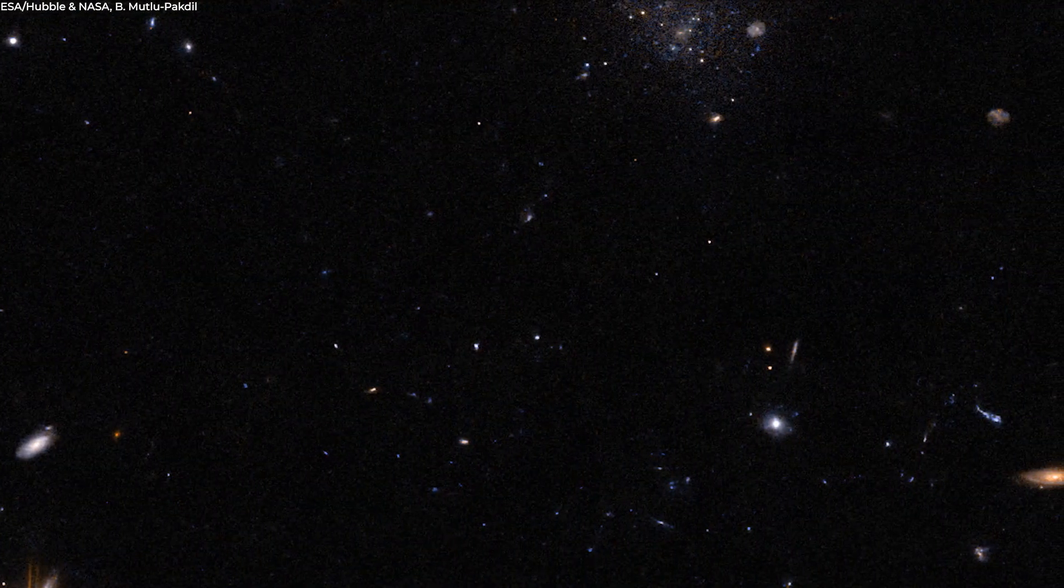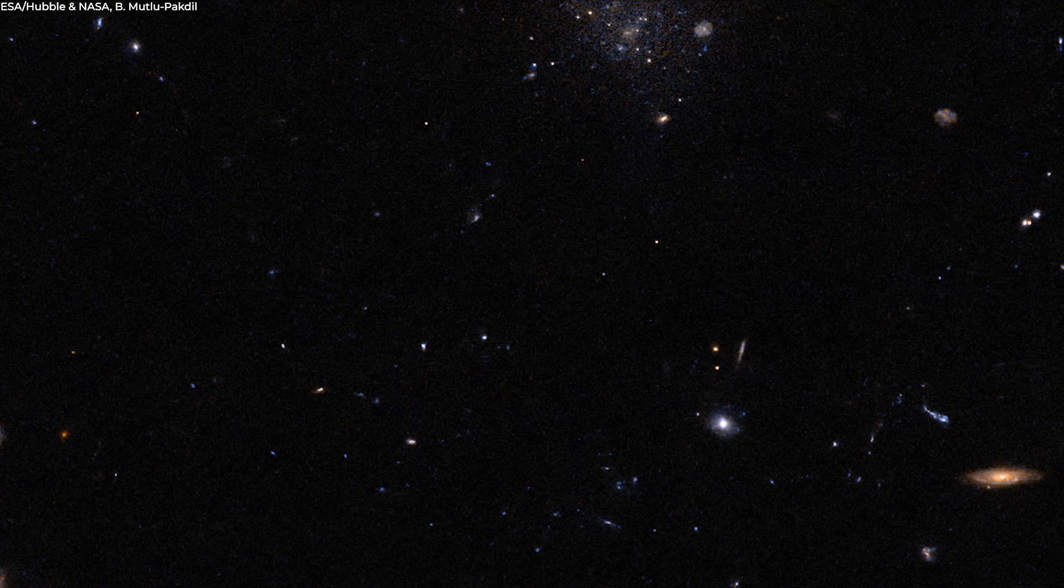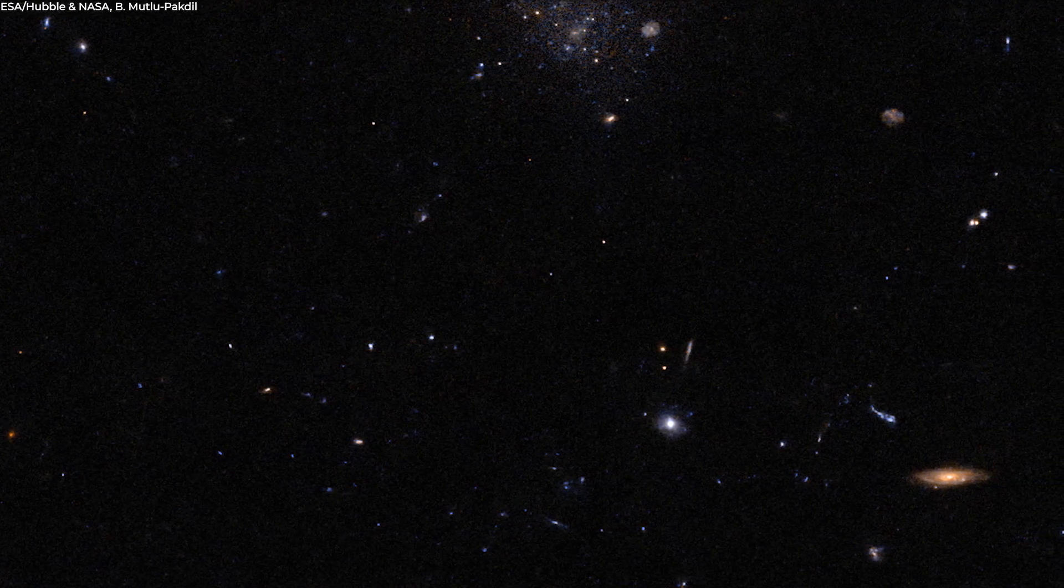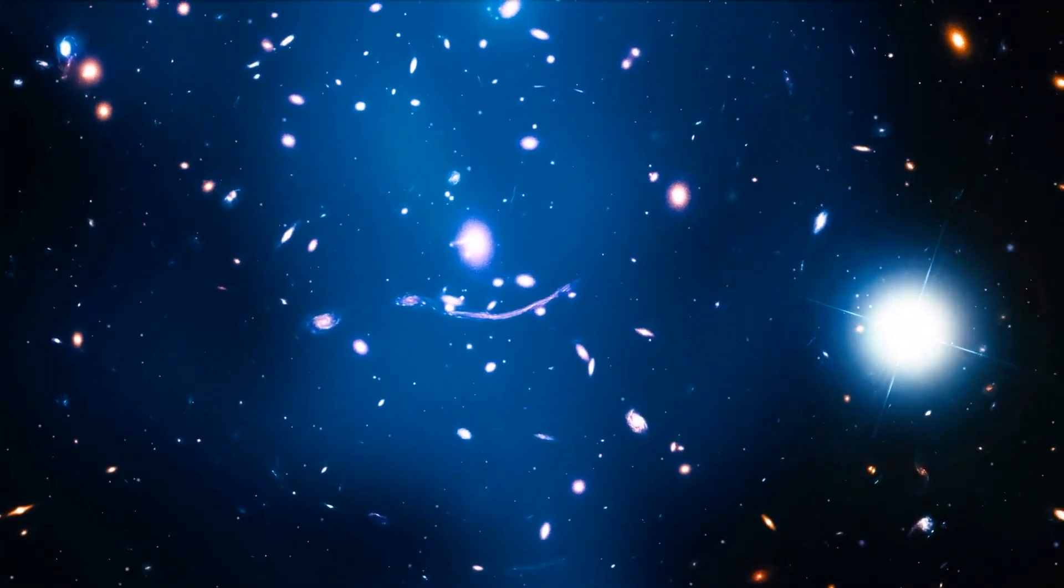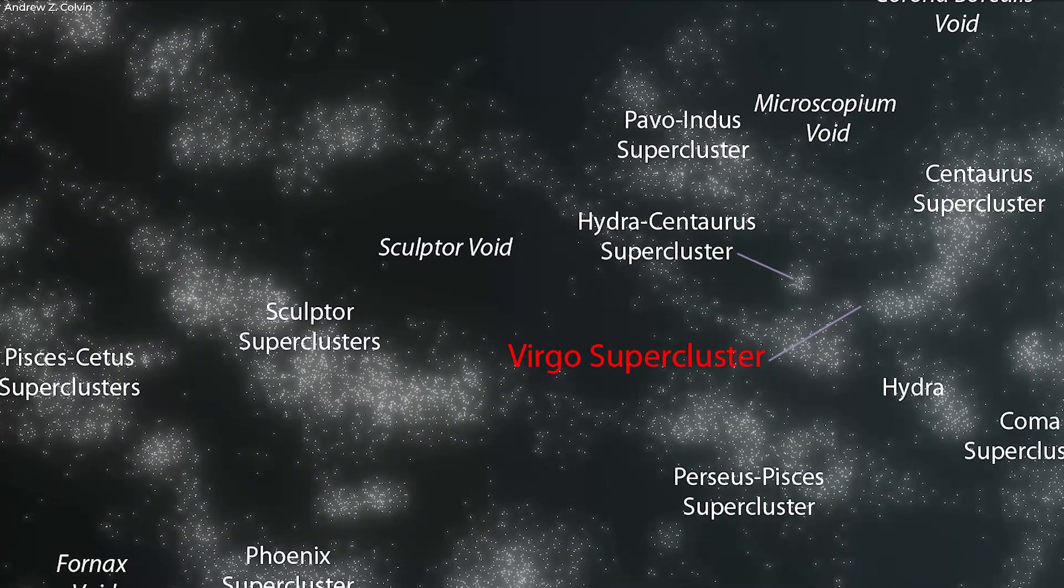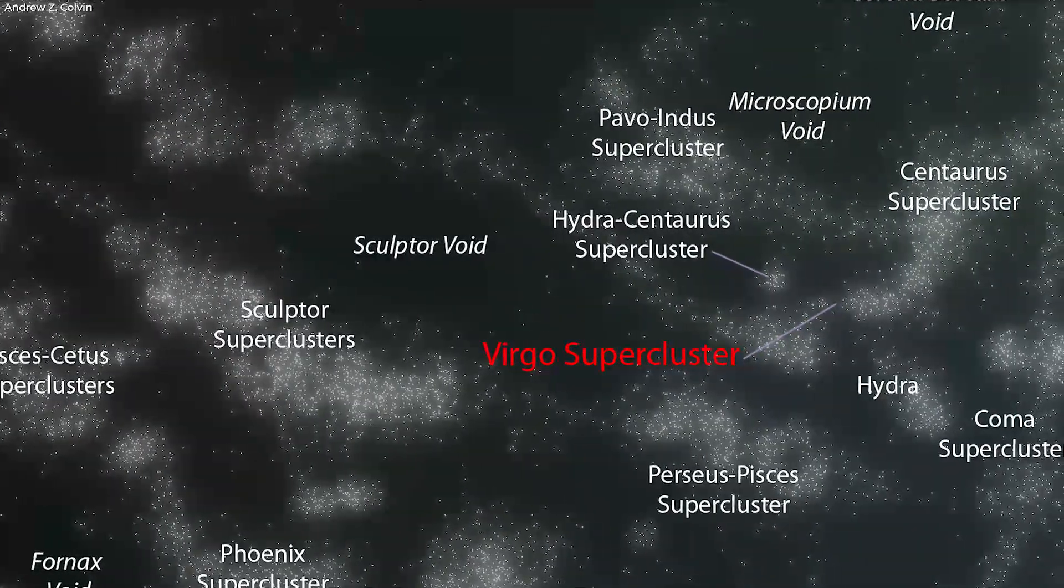If you search hard enough, you can find small dim dwarf galaxies scattered inside the voids, and of course there's the ever-present thin soup of radiation and particles that flood the cosmos. But the voids are well and truly empty.